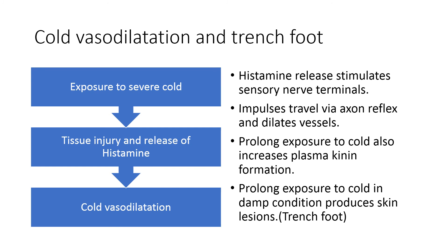Exposure to cold decreases blood flow to skin and reduces heat loss from the body. When skin temperature falls below 10°C, tissue injury occurs. This leads to histamine release, which stimulates sensory nerve terminals, activating the axon reflex and releasing substance P, which dilates blood vessels — this is known as cold vasodilation.